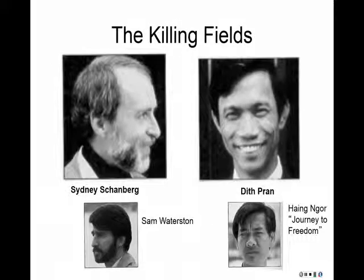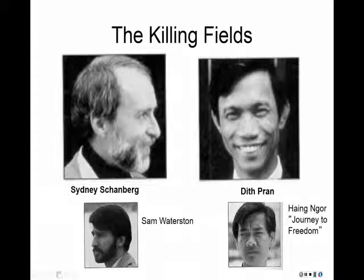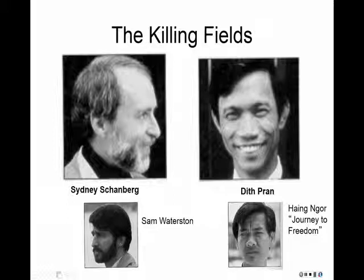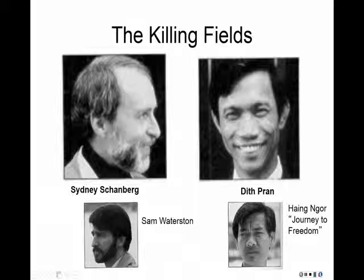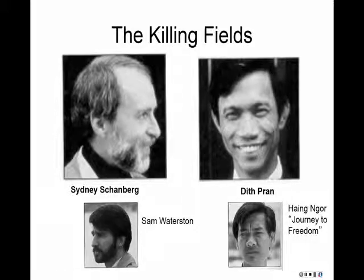This is portrayed in the movie called The Killing Fields. Americans and Europeans in Cambodia when it falls to the Khmer Rouge — a writer for the New York Times, Sidney Schanberg, is aided by a gentleman called Dith Pran, who is his guide and a journalist himself. In the movie, Sam Waterston portrays Sidney Schanberg. Heng Nyor, who authored the piece about Journey to Freedom, winds up in the United States as a refugee, becomes an actor, and portrays Dith Pran in The Killing Fields. Sadly, Heng Nyor is killed in a drive-by shooting in Los Angeles after winning an Academy Award for his portrayal.